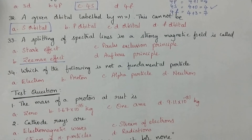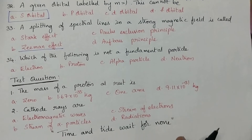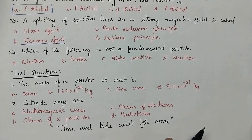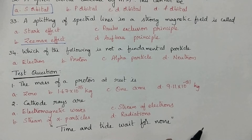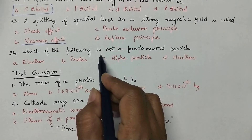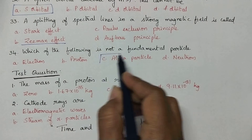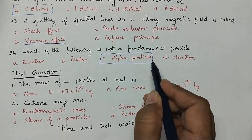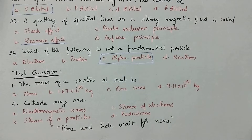Which of the following is not a fundamental particle? There are 3 fundamental particles, namely electron, proton and neutron. So option C is the right answer — alpha particle is not a fundamental particle.